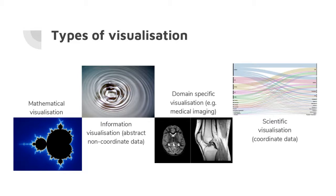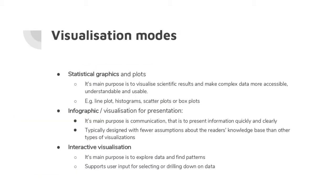Then you have traditional information visualization, domain-specific visualization — for example in medical imaging — and finally, which is more the topic of this week, scientific visualization. Usually we deal with coordinate data, some space that can be two-dimensional or n-dimensional, where each instance is represented by a point in that space.